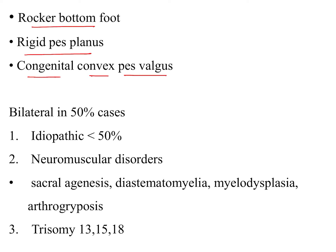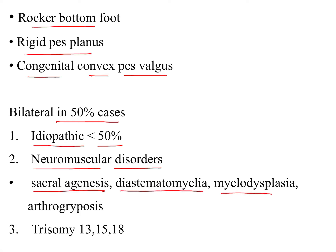Mostly it is a bilateral deformity and the most common cause is still idiopathic in less than 50 percent of cases. But in some cases it has been linked to neuromuscular disorders such as sacral agenesis, diastematomyelia, myelodysplasia, and arthrogryposis. Trisomy is also seen in chromosomes 13, 15, and 18 in some congenital vertical talus patients.